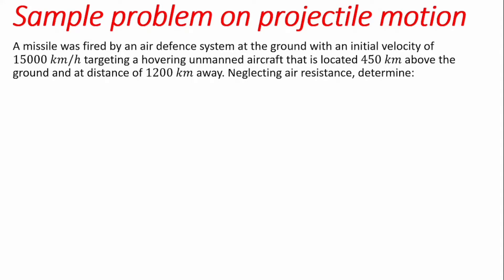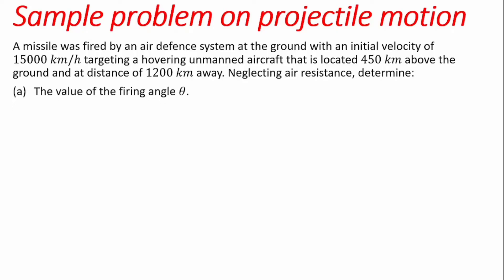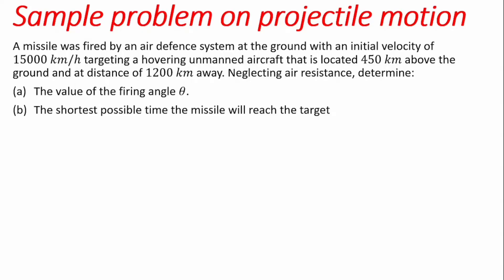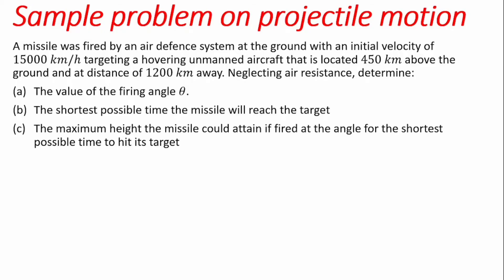The aircraft is located 450 kilometers above the ground and at a distance of 1,200 kilometers away. We are told to neglect air resistance and to determine the value of the firing angle theta, find the shortest possible time the missile will reach the target, and find the maximum height the missile could attain.